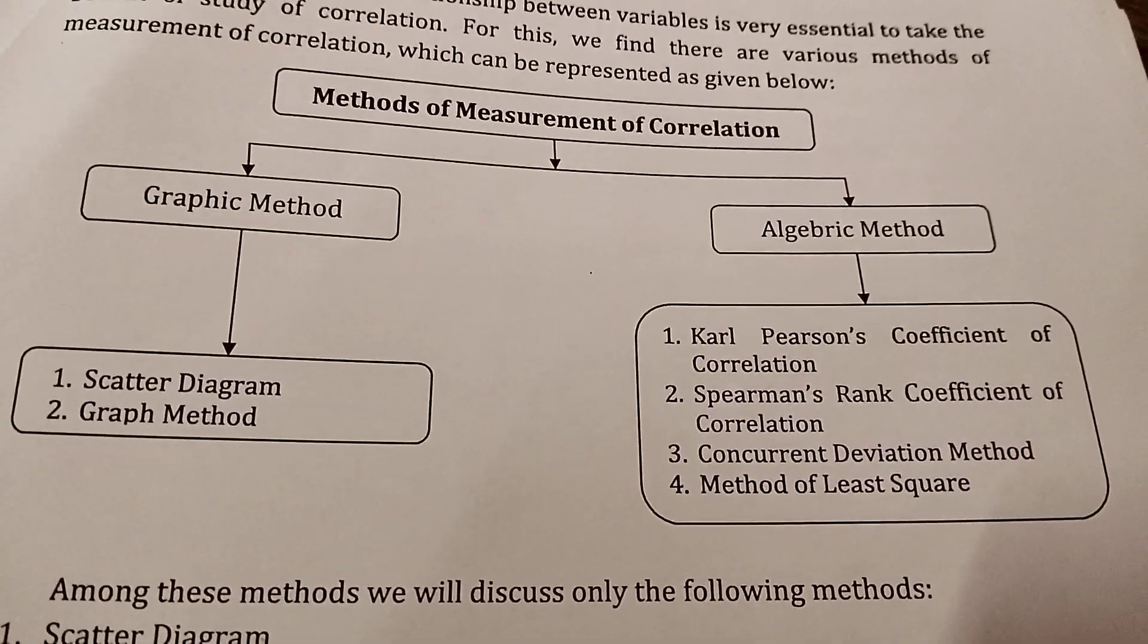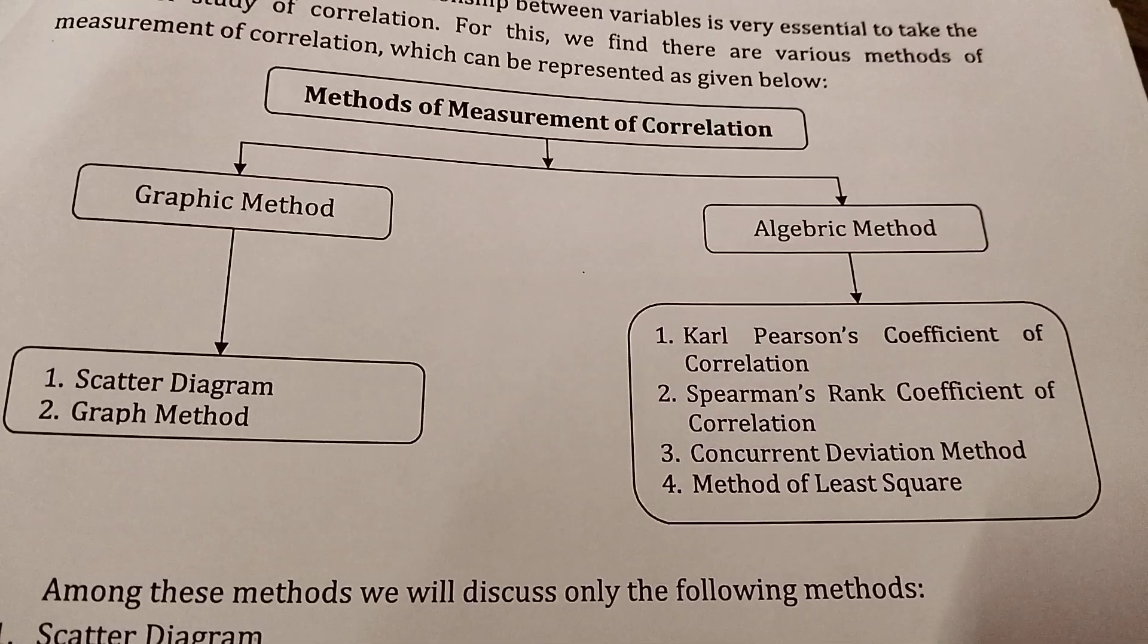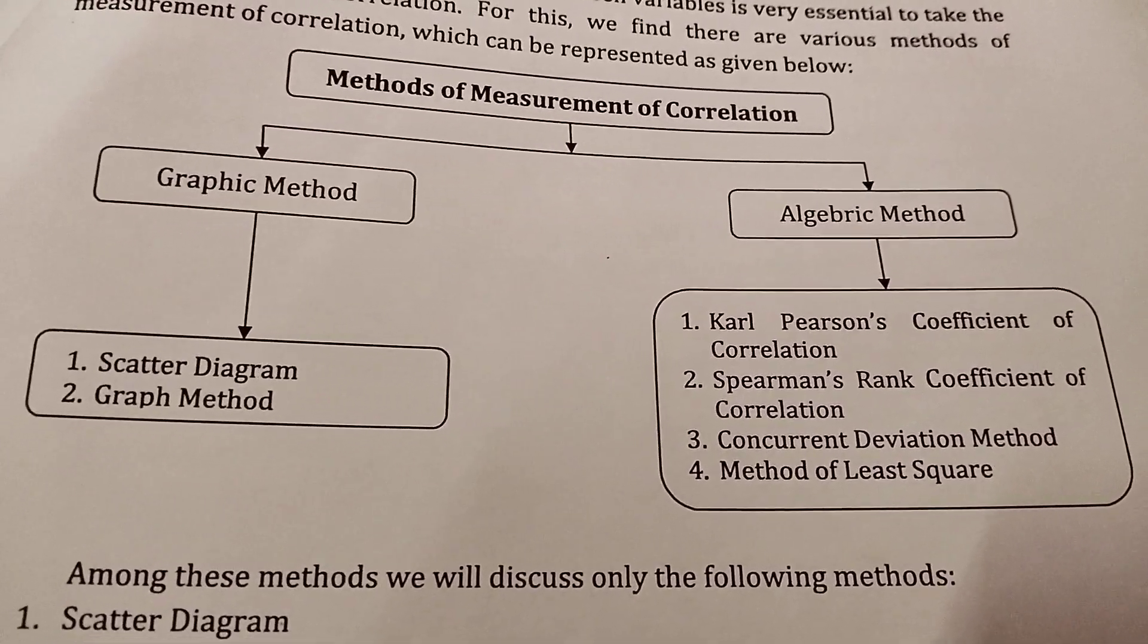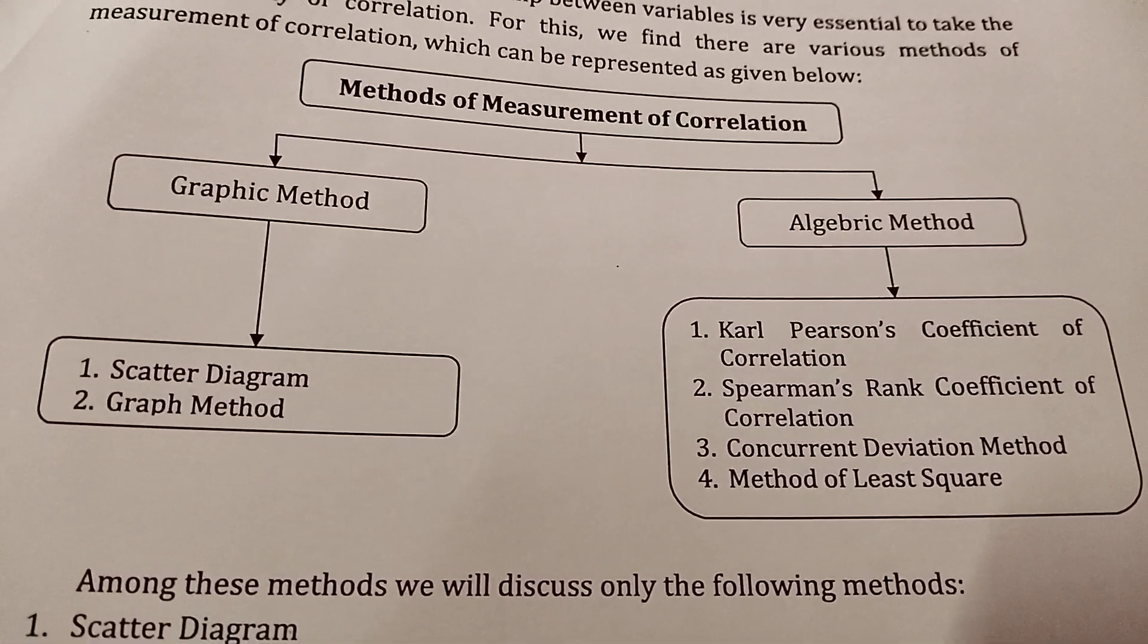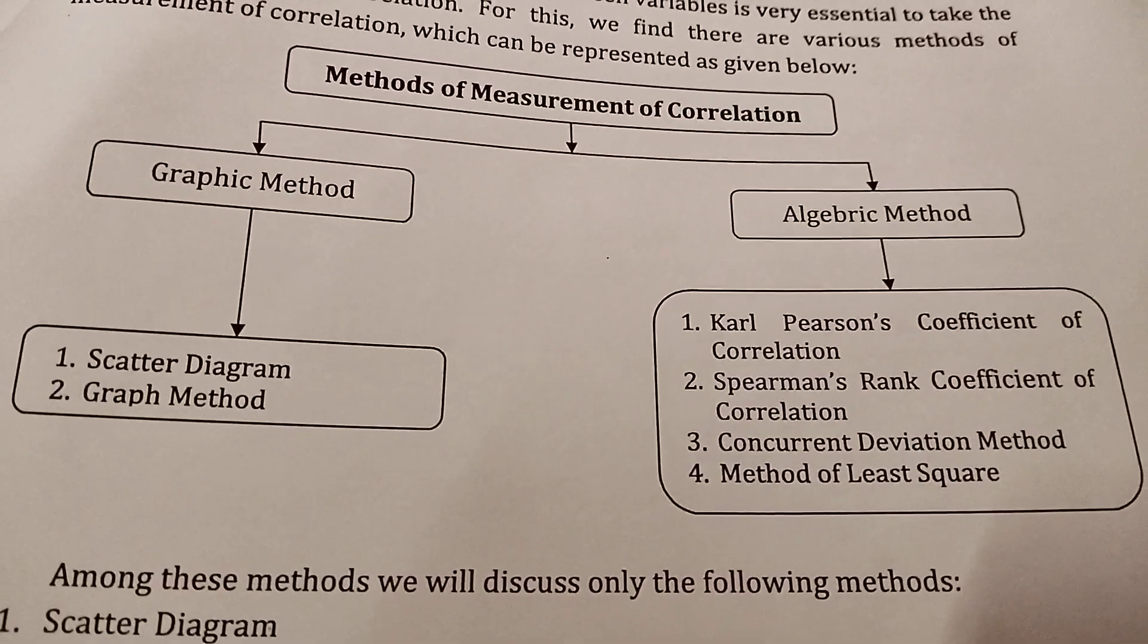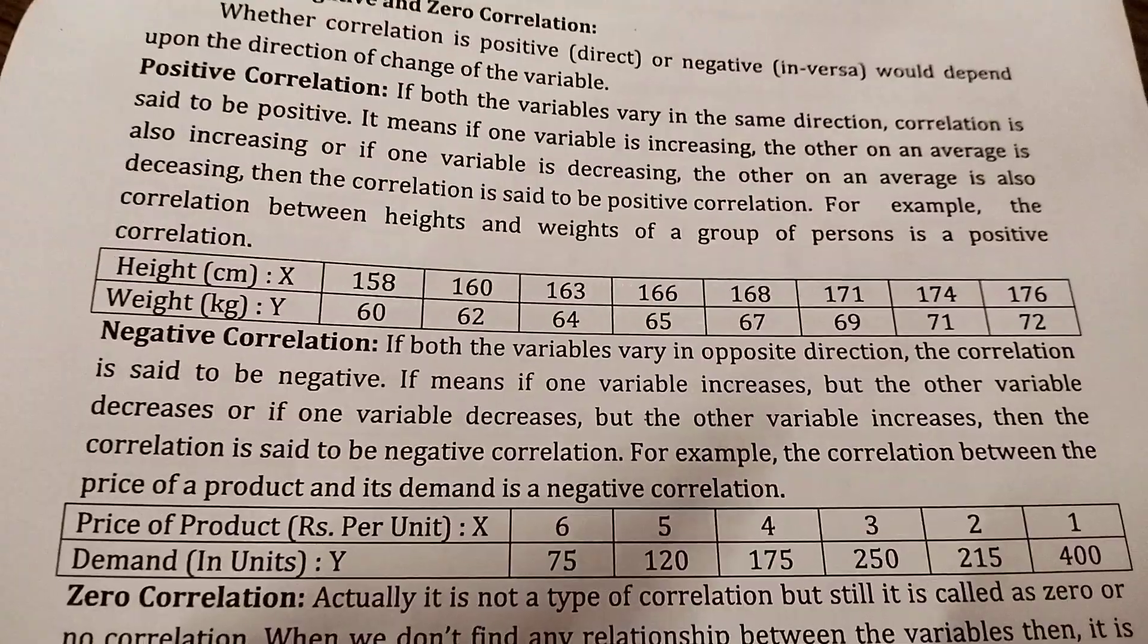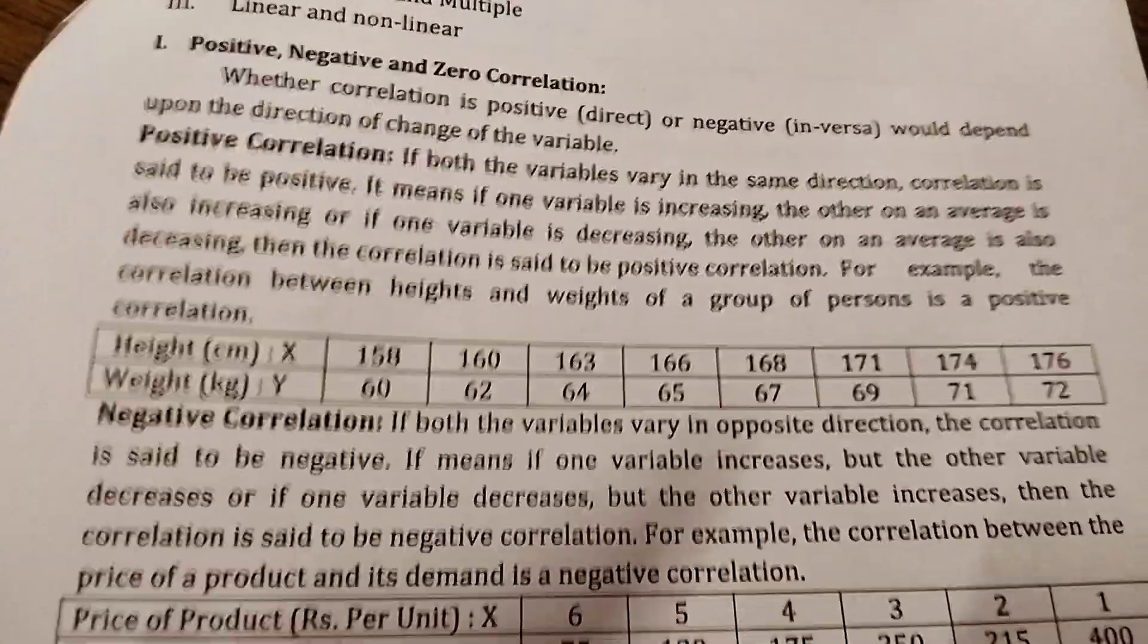In the algebraic method, we have Karl Pearson's coefficient of correlation, Spearman's rank correlation method, concurrent deviation method, and least square method. Mostly in MBA, Karl Pearson coefficient correlation and Spearman rank correlation will come. Now I will explain how you can identify which problem type in the question paper.